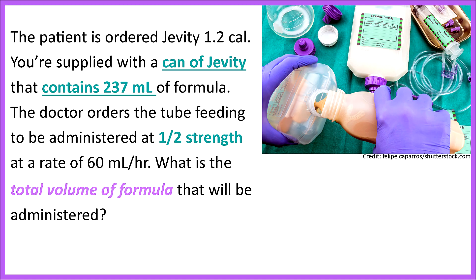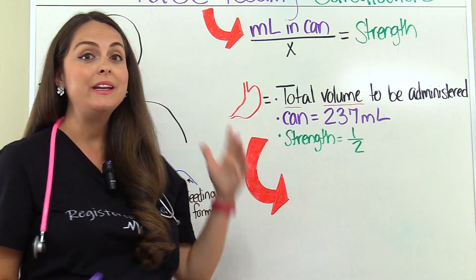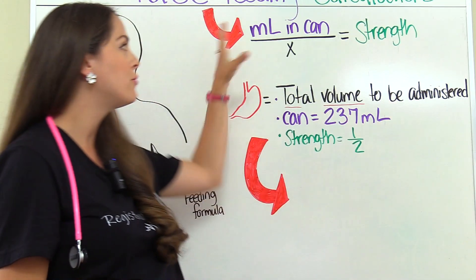You need to look in the problem and see what you need to pull out to do your calculation. Remember, a lot of problems are going to give you information you really don't need — those are called distractors. What's important in this scenario is the amount of formula in that Jevity can, which is 237 milliliters, and the strength the doctor ordered. We're not concerned about the 60 milliliters per hour to calculate total volume — that's our distractor. So since we know what we're solving for, we're ready to use the formula.